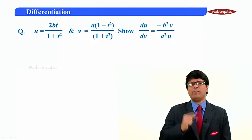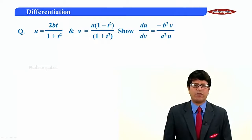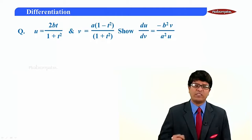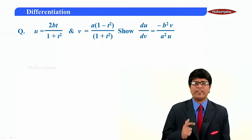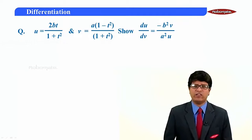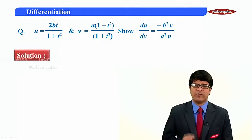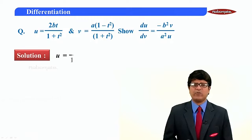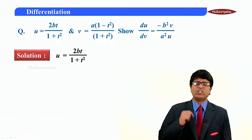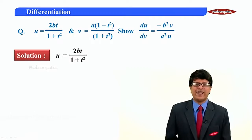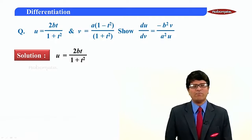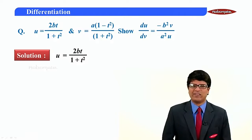A very important problem, my friends, from an exam point of view. A very important one. Let us start with u. u is equal to 2bt upon 1 plus t square.